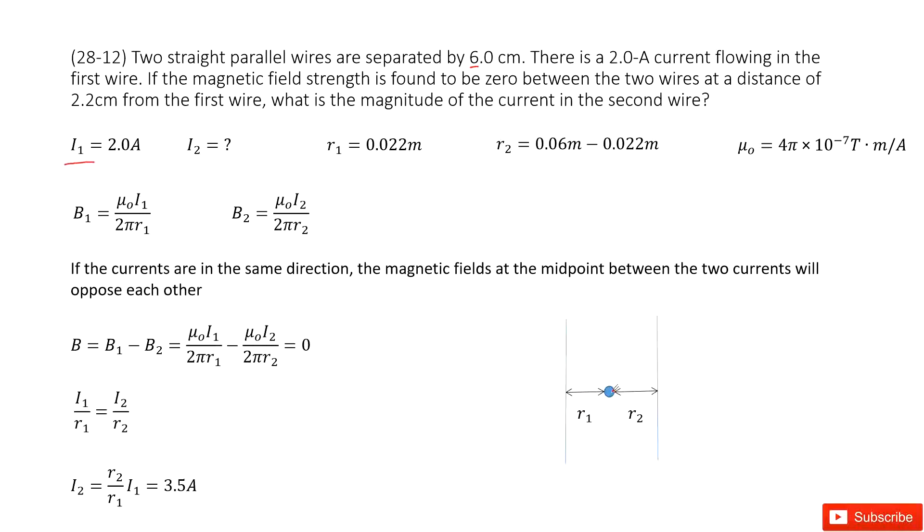there is a point, this point, with a distance 2.2 cm from the first wire, where the magnetic field is 0.